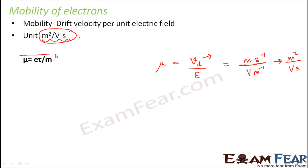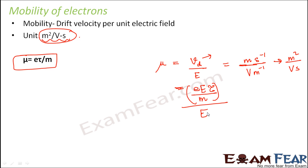What would be the expression for mobility? Mobility μ = eτ/m. How do we get that? Because drift velocity = eEτ/m, and dividing the entire expression by E, the two E's cancel. So mobility of an electron is given by the charge on an electron multiplied by the relaxation time, divided by the mass of an electron — that's how we measure mobility of electrons.